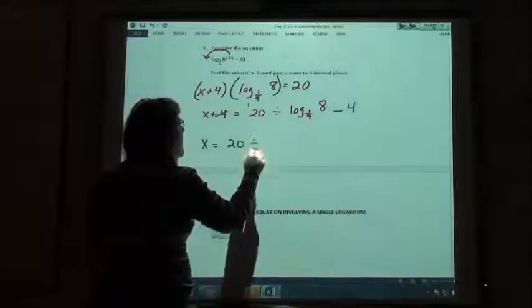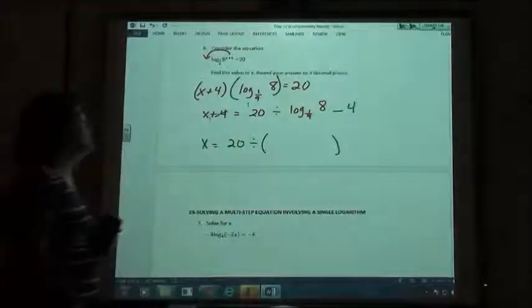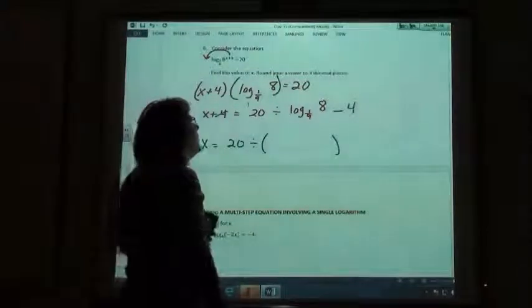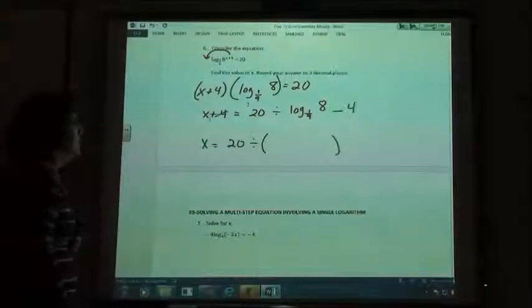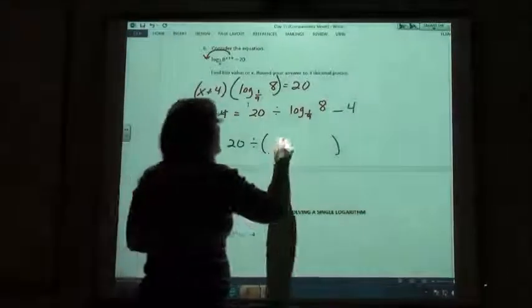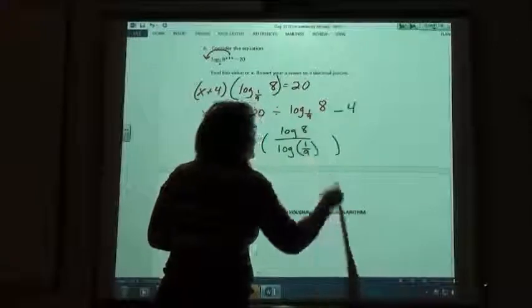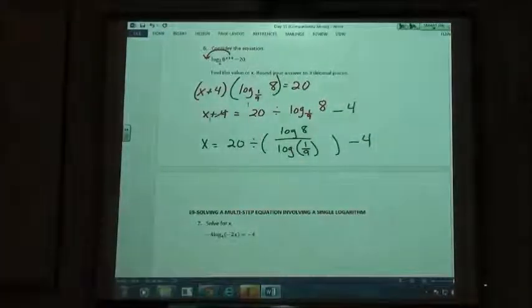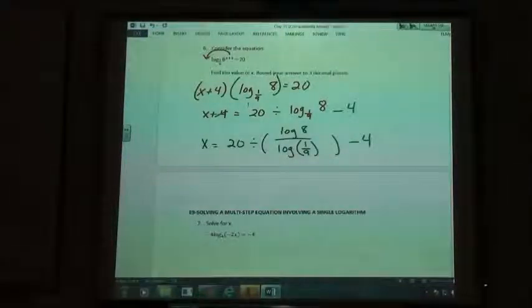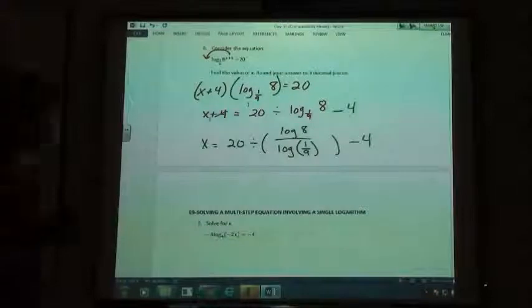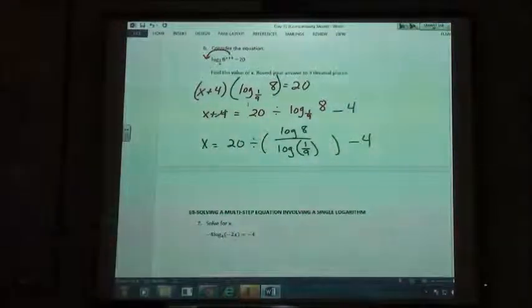So, in our calculator, we're going to do 20 divided by... And then what are we going to do with that? 20 divided by log 8 divided by log 1/9. 1/9. And what do we have to do with the 1/9? We've got to put that in parentheses. Exactly. Minus 4. Let's punch her in and see what we get. You want to do another parenthesis? Yep. Because you're going to have a parenthesis here and then a parenthesis on the end. So there will be two parentheses on the end.